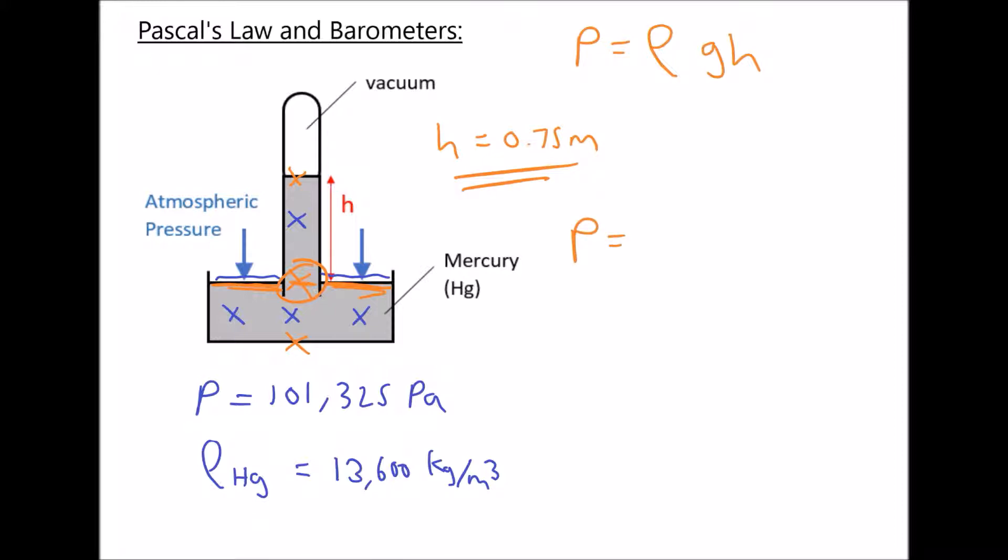we have pressure equals density, 13,600, times gravity, 9.81, times the height of our column of liquid, 0.75, giving us a pressure equal to 100,062 pascals.